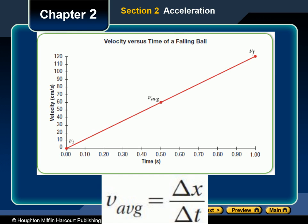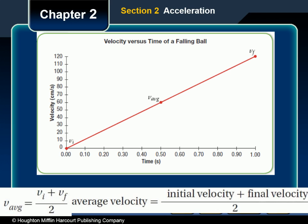Displacement depends on acceleration, initial velocity, and time. Figure 2.5 is a graph of the ball's velocity plotted against time. The initial, final, and average velocities are marked on the graph. We know that average velocity equals displacement divided by the time interval: average velocity equals delta x divided by delta t. For an object moving with constant acceleration, the average velocity equals the average of the initial and final velocities: V average equals (V sub i plus V sub f) divided by 2.